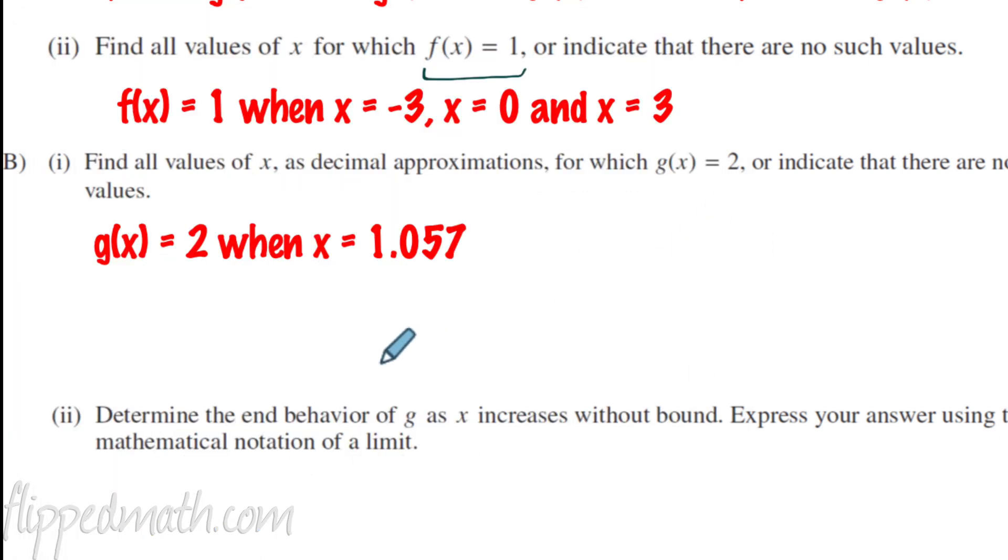So we need to write that with limit notation. The way we do that is, again, we're focused on x going to the right. It increases without bound. So we say the limit as x goes to the right or increases without bound. We say x going to infinity of g of x. Okay. So what happened to our function? It eventually went to 0. And so we express our answer using mathematical notation of a limit. Perfect.